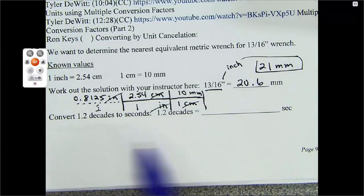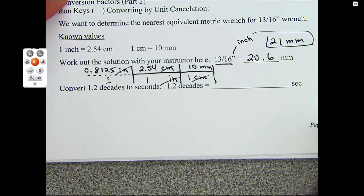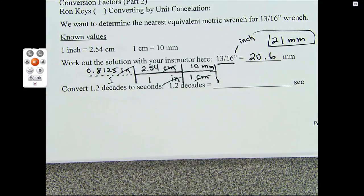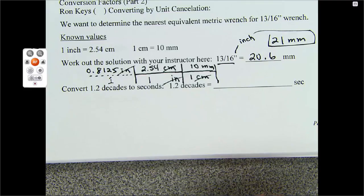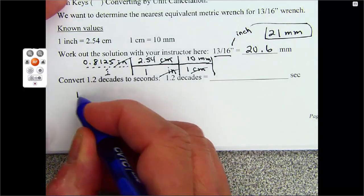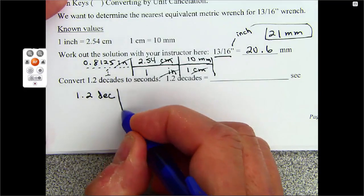Let me show you a unit cancellation method: 1.2 decades to seconds. Make sure you know how to do this. Don't say oh, there's an app for that. We don't have an app with you all the time. I'm going to give you some things on the test that you're going to have to know how to convert.